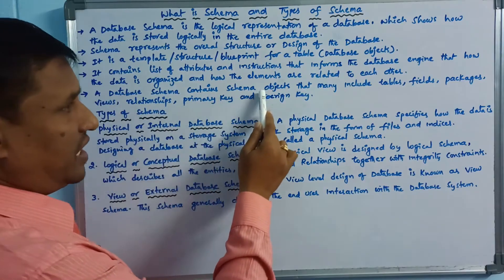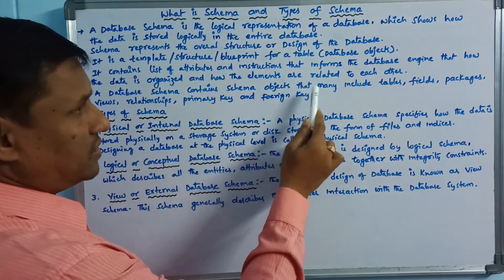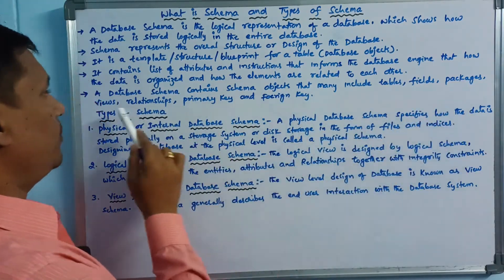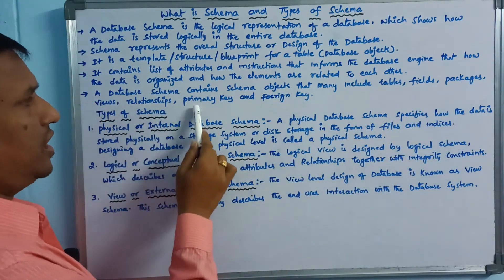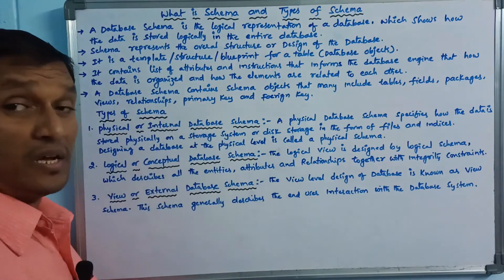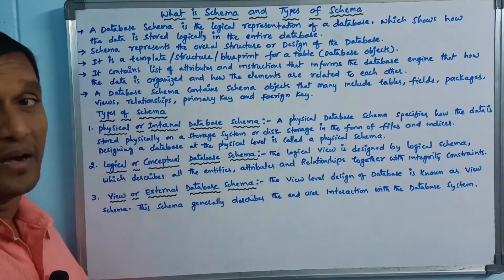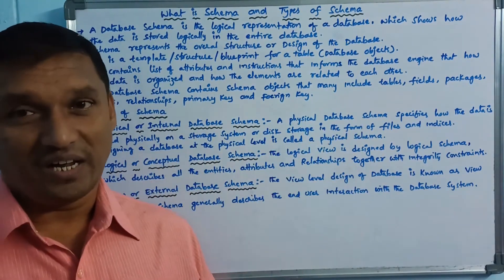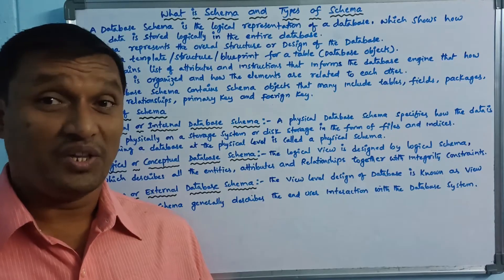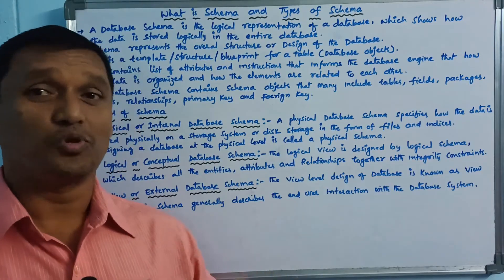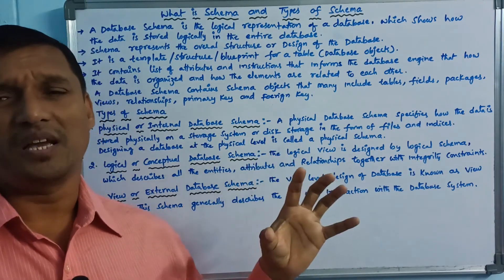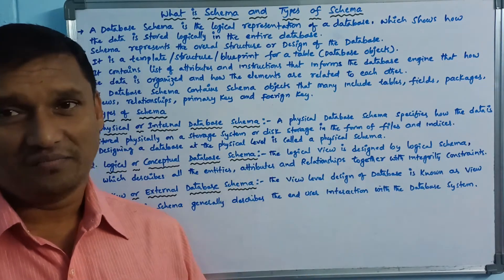This schema contains schema objects. That may include table, field, package, views, relationship, primary key, and foreign key. The primary key holds unique data. The foreign key is a relationship key between tables.